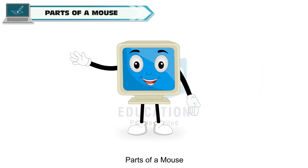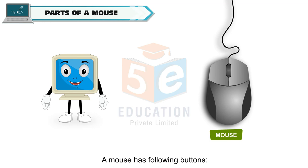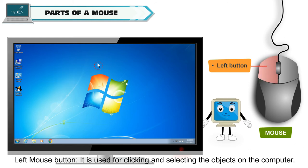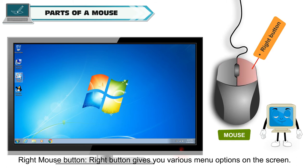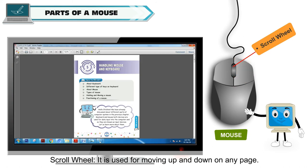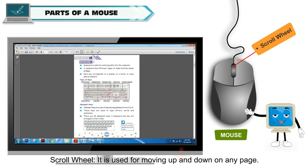Parts of a mouse — a mouse has the following buttons. Left mouse button: it is used for clicking and selecting the objects on the computer. Right mouse button: it gives you various menu options on the screen. Scroll wheel: it is used for moving up and down on any page.